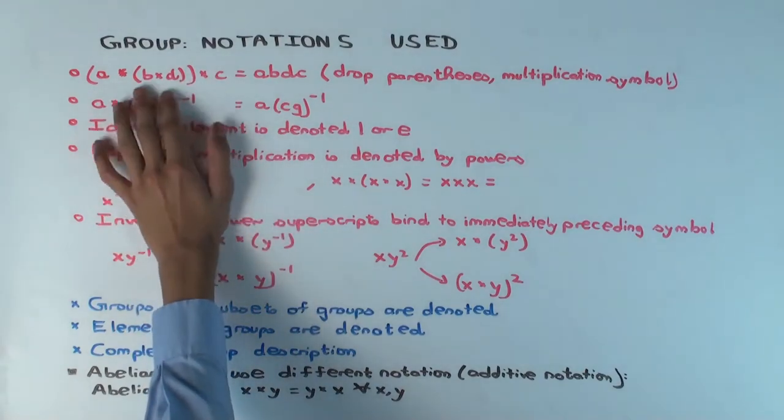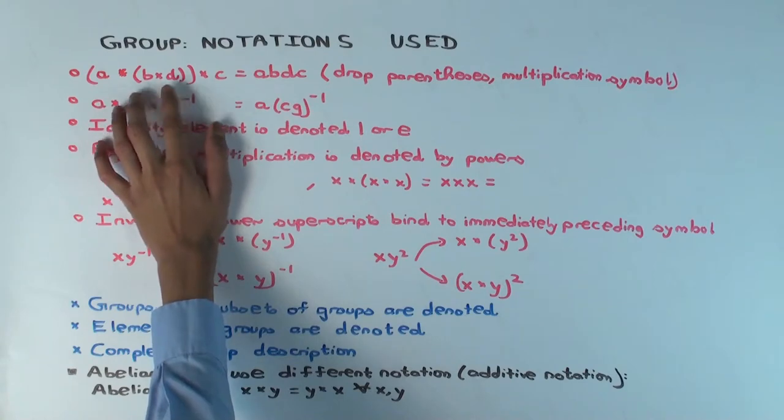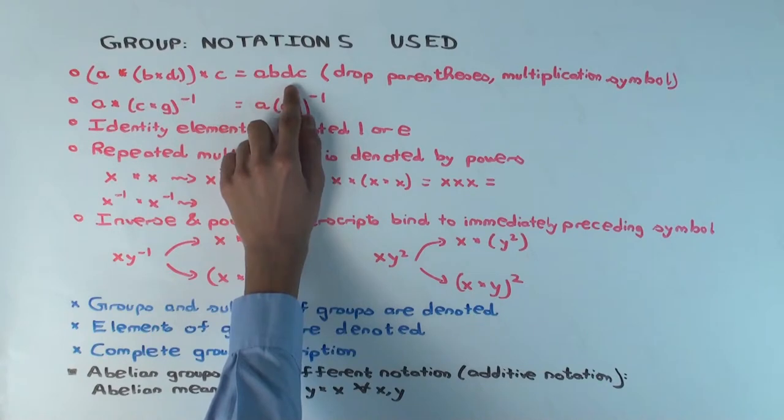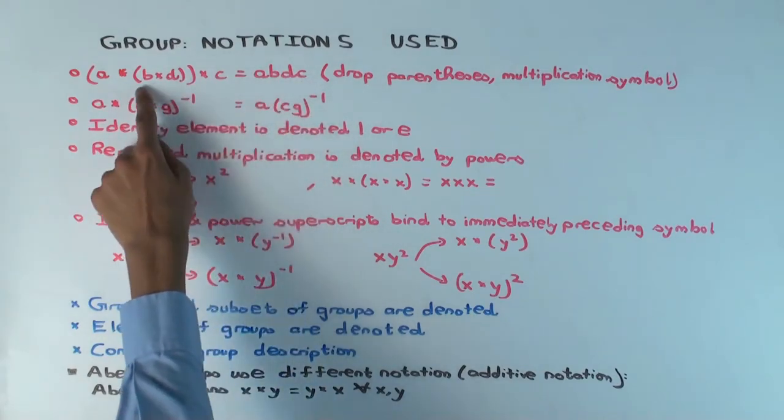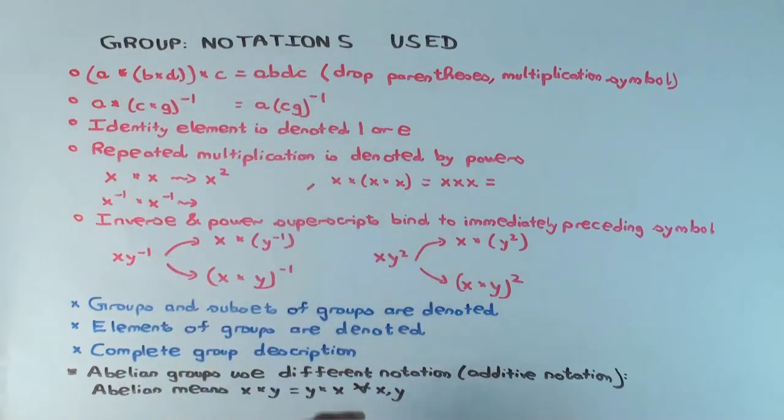The first is that when you have products involving the groups, you can drop parentheses from the products. So if you have this type of product, you can write it just as A, B, D, C. So you can drop both the parentheses and the star, the group operation symbol.